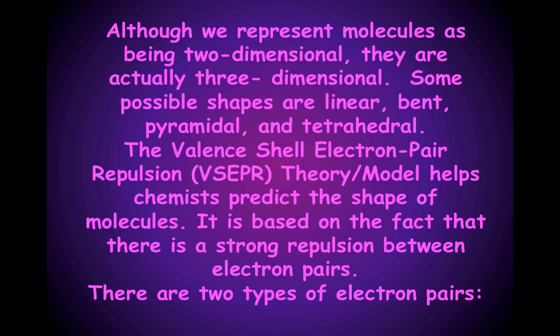Although we represent molecules as being two-dimensional, they are actually three-dimensional. Some possible shapes are linear, bent, pyramidal, and tetrahedral. The valence-shell electron pair repulsion theory, abbreviated VSEPR, helps chemists predict the shape of molecules.